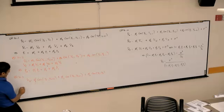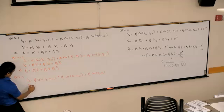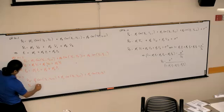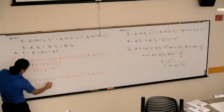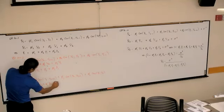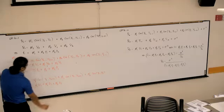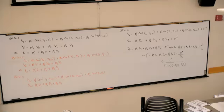Now, gamma 3 would be phi 1 gamma 2, plus phi 2 gamma 1, plus phi 3 gamma 0, using the same logic.